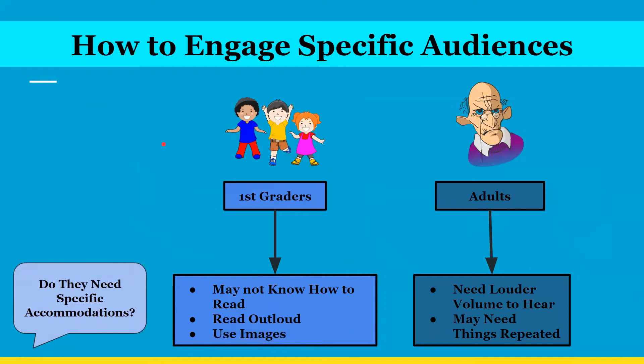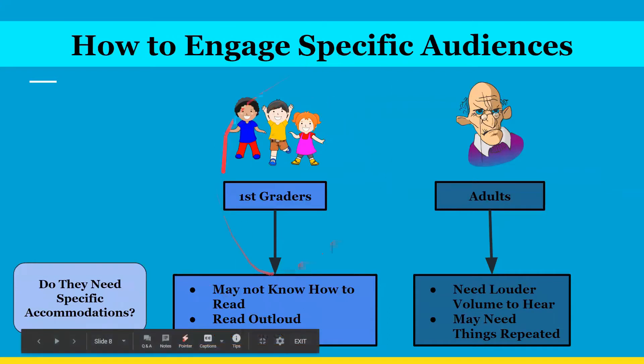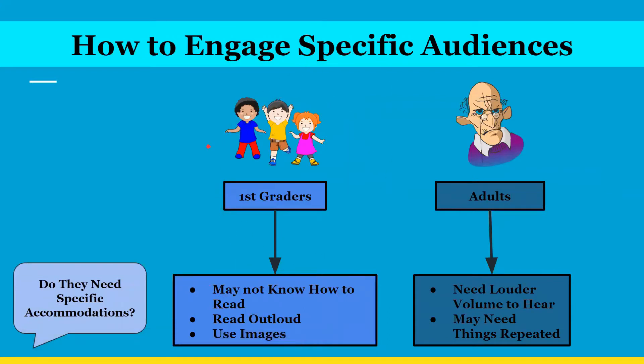Now we need to make sure we have specific accommodations for our audiences as well. If we're presenting to first graders, we need to understand that not every first grader knows how to read, so we might need to read out loud and use images to keep them entertained. But for adults, they probably know how to read, but they might need a louder volume to hear since they might be losing their hearing, and they also might need things to be repeated.